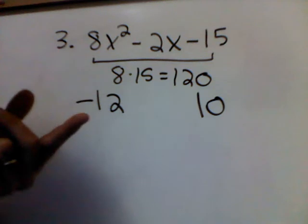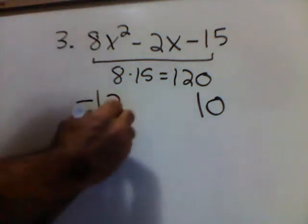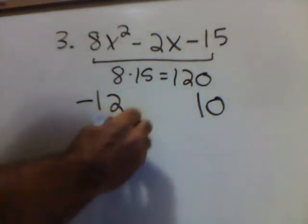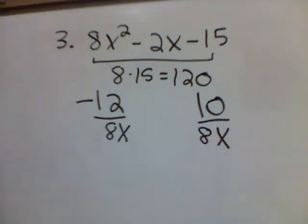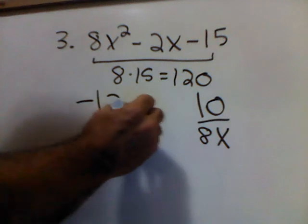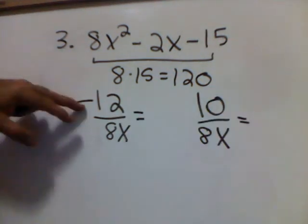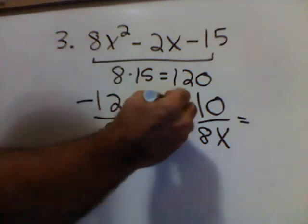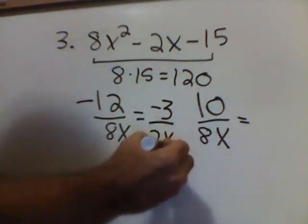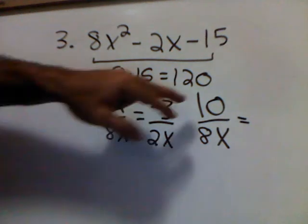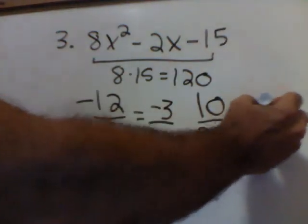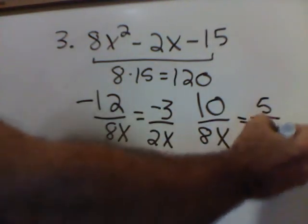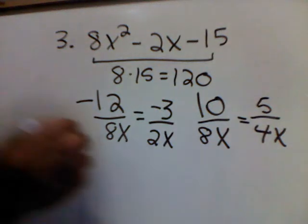Now, I'm going to divide both of these by the first number, which is 8, and the variable. Same thing over here. Divide by 8 and the variable. Next, reduce the fractions. If you notice, 12 and 8 both have a 4 in them, so dividing out the 4 gives me negative 3 over 2x. Over here, 10 and 8 both have a 2 in them, so dividing both of them by 2 gives me 5 over 4x.